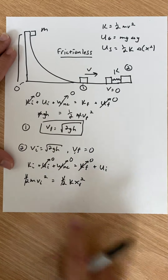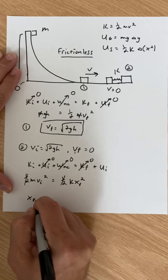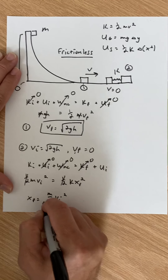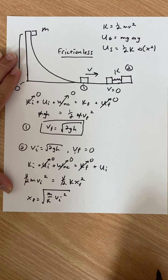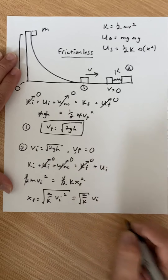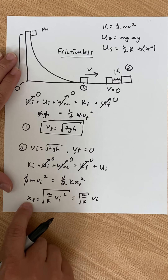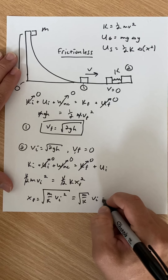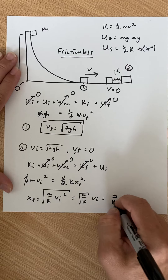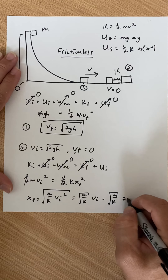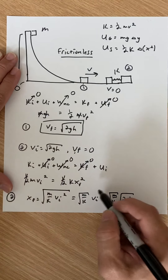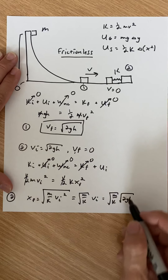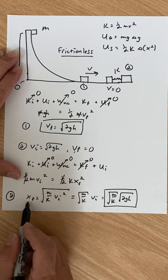I can get rid of the one-halves, but I can't cancel masses because there's no mass on the spring side. Solving for x-final gives root of m over k, times v-initial. I take the positive root since I only care about distance. Making the substitution for v-initial, I get x-final equals root(m/k) times root(2gh). This is the final compression distance of the spring.